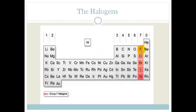Let's start by talking about the Halogens. We know the Halogens are Group 7 and they are made up of Fluorine, Chlorine, Bromine, Iodine, and Astatine. Now we don't worry about Astatine, we just look at Fluorine, Chlorine, Bromine, and Iodine.